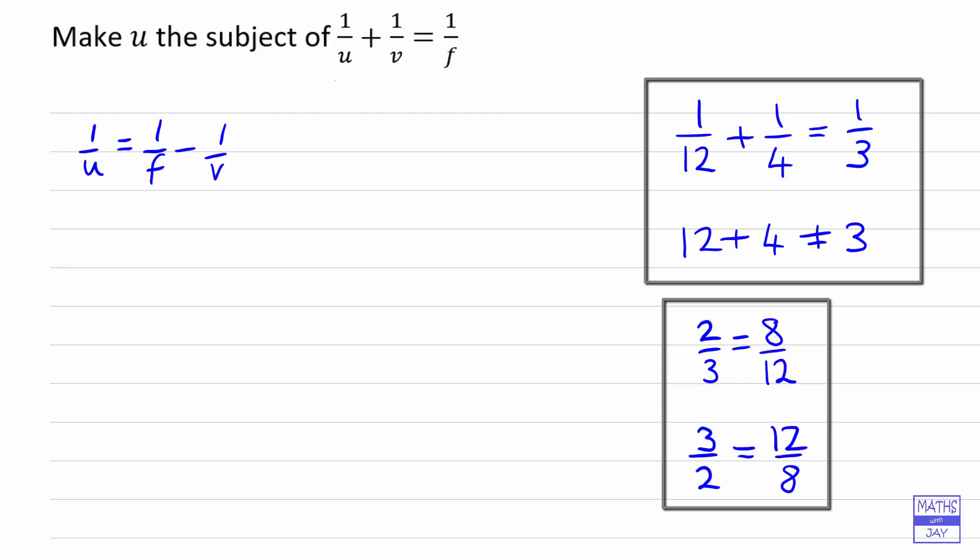What that means is I want to write the right hand side as one fraction, so we've got one over U is equal to something over something. Then we can turn both sides upside down to get what U is equal to. It'll be U over one, and in other words that's just U. So we need to combine together one over F minus one over V, make that into one fraction.